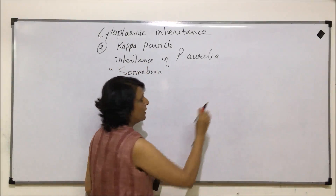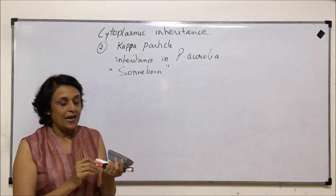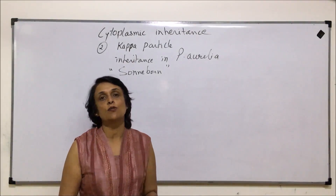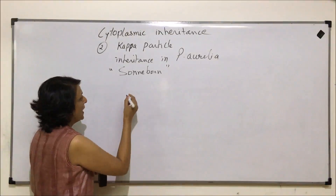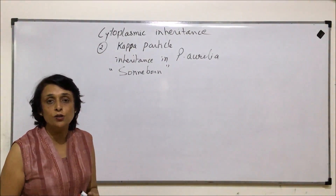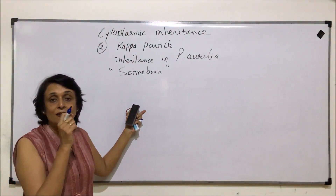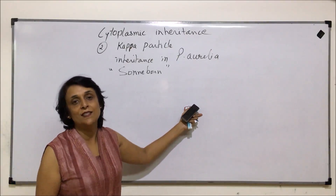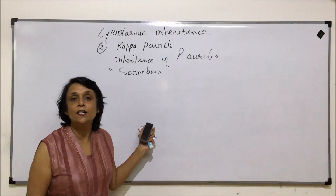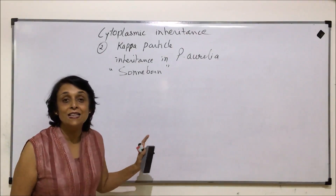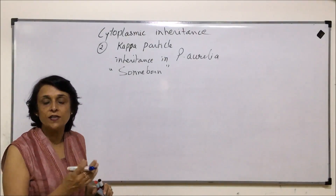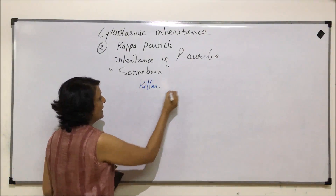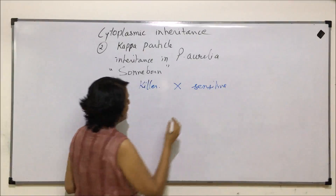Now let us talk about this inheritance and how the gene gets transferred in Paramecium. Sexual reproduction is not very well developed; there is a primitive type of sexual reproduction known as conjugation. If two paramecia are made to conjugate — a killer strain with a sensitive one — this is not possible in nature because the killer will produce parameucin which would kill the sensitive one. So this is done in a lab where the water is free of parameucin, otherwise the sensitive will die and conjugation will not take place.